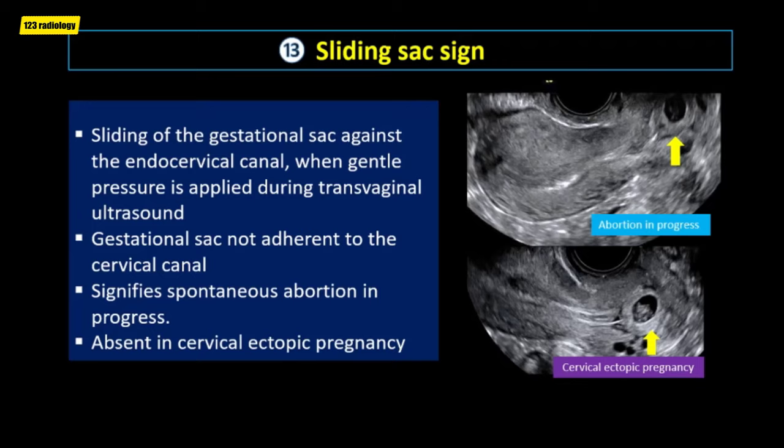The lemon sign represents the loss of the normal convex contour of the frontal bones with flattening or inward depression. It is seen on axial fetal ultrasound images obtained at the biparietal diameter level. It has a strong association with spina bifida and is very useful for detecting this condition before 24 weeks of gestation. The lemon sign may disappear as gestational age advances and is less reliable after 24 weeks.